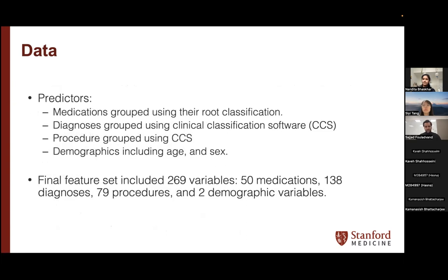In terms of predictors, we used patients' historical medications, diagnoses, procedures, and demographics — in our data we only had access to age and sex. We looked at patient history over 10 years of data from 2009 to 2020. Since there were so many codes in our data — diagnoses recorded using ICD-10 and ICD-9 codes — we didn't want to focus on a few selected features. We wanted to create an end-to-end model looking at the entire history.